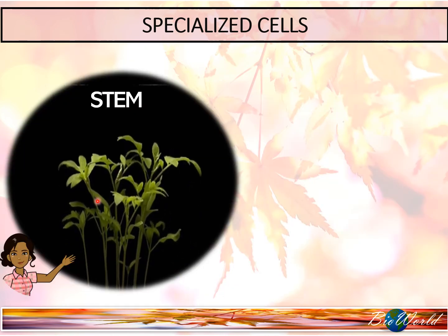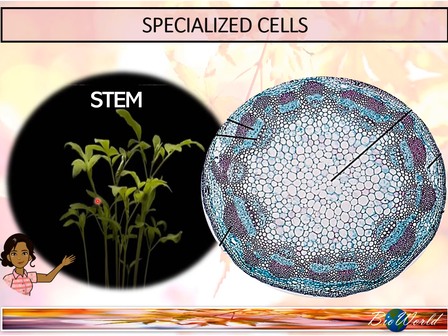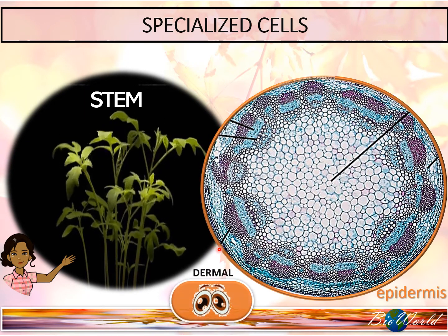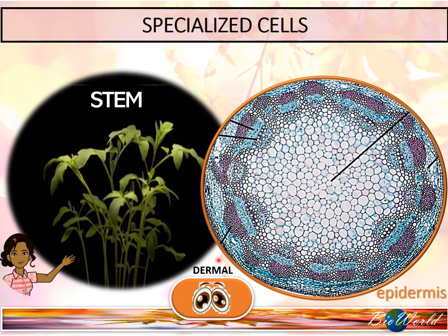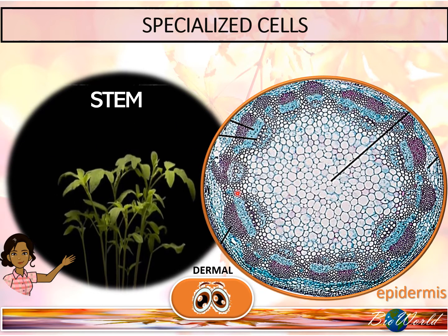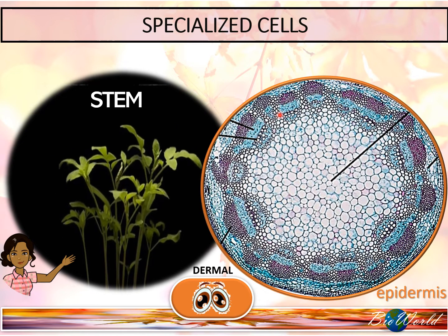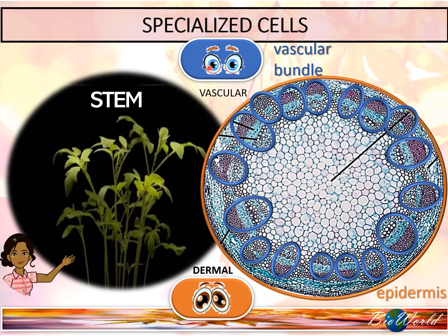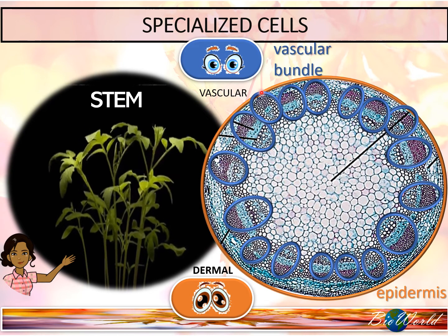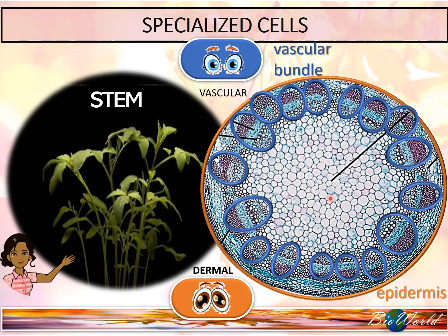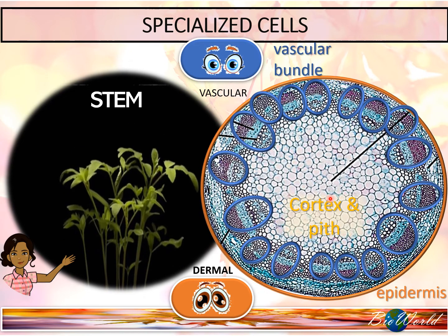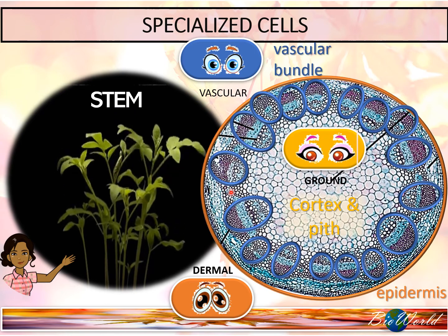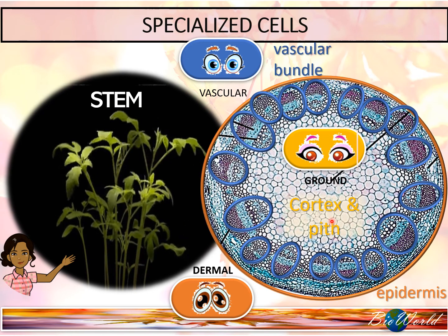Next, we look at the cross-section of the stem. The dermal tissues are distributed in the epidermis, and here you can see a ring of vascular bundles which contain the vascular tissues. The center is known as the pith, and the surrounding area is known as the cortex, which contains the ground tissues.